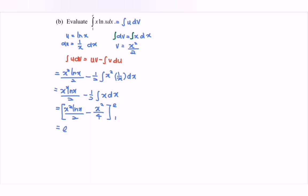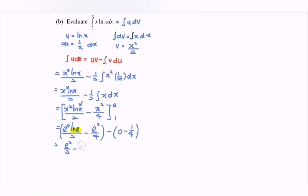Substituting the limits: at e, we have e squared ln e over 2 minus e squared over 4. Substituting 1, ln 1 equals 0, so we have minus 1 over 4. Simplifying, we have e squared over 2 minus e squared over 4, plus 1 over 4, which gives us e squared over 4 plus 1 over 4.